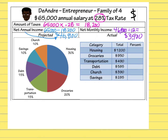The next thing we're going to look at is the percent column on the far right side, which is not filled in. We know we have $3,900 to spend, and we have the actual dollar amounts being spent in each category. To fill in the percent column, we take each dollar amount, divide it by the total dollars we have for the whole month, then multiply by 100.